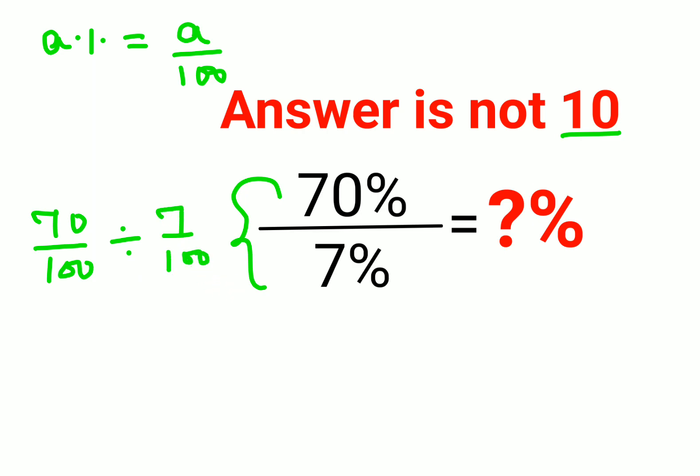Now when you have division, you always follow the rule of KCF where K stands for keeping the first fraction as it is, C stands for changing the division sign to multiplication, and F stands for flipping or taking reciprocal of 7 upon 100. That is nothing but 100 upon 7.